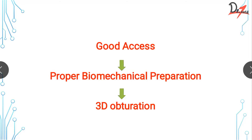Good access is a must for proper biomechanical preparation, because biomechanical preparation involves two basic steps: cleaning and shaping. For both steps it's very important that you have a good, straight line access — for your irrigation protocol, for your rotary endodontics, whatever you are doing. Only if you do a proper biomechanical preparation can you achieve a three-dimensional obturation. All three steps are equally important, but since access opening comes first, it has to receive the most attention.